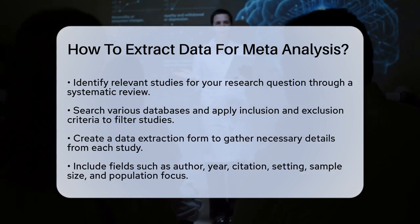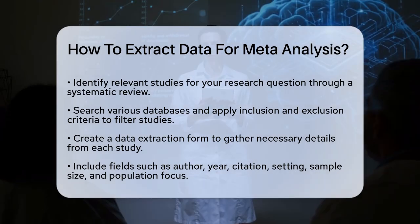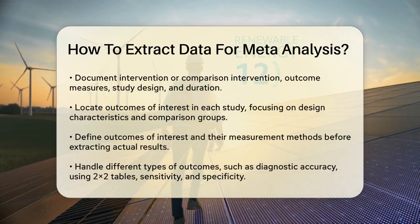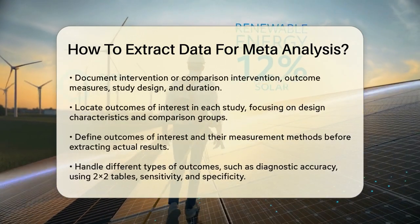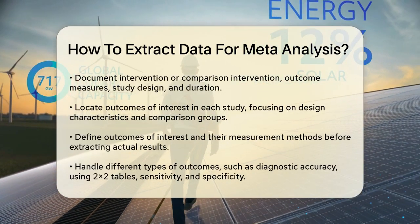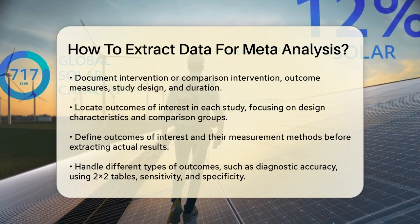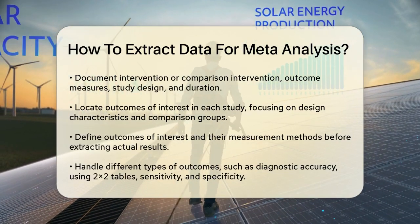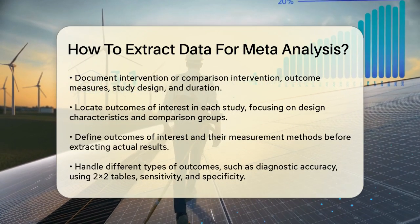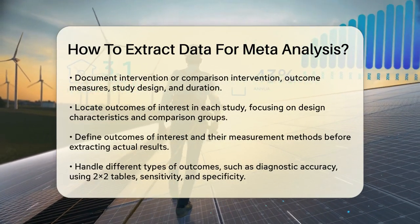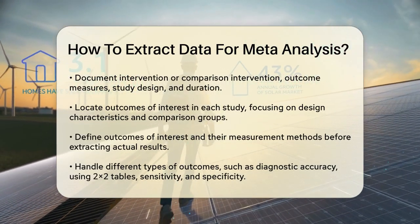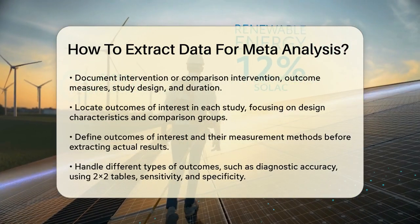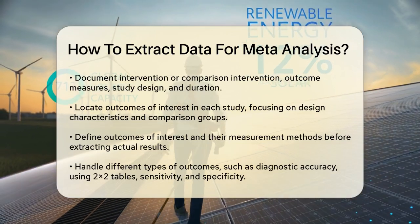Now let's talk about the actual process of extracting data. You need to locate the outcomes of interest in each study. This involves identifying the design characteristics, such as the intervention or exposure and the comparison groups. You also need to define the outcomes of interest and how they are measured. Finally, you extract the actual results, which are the measures of the outcome variables.